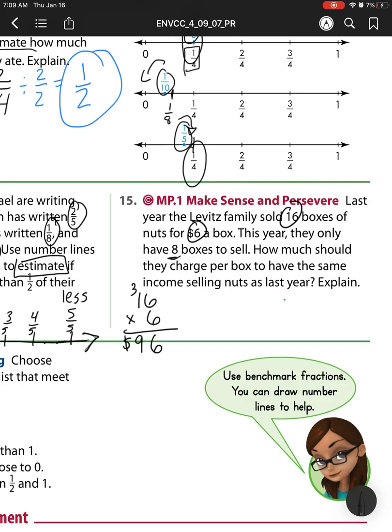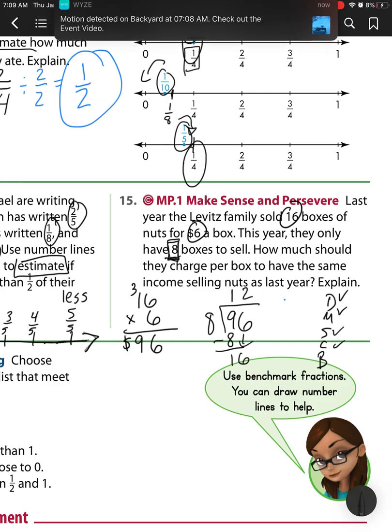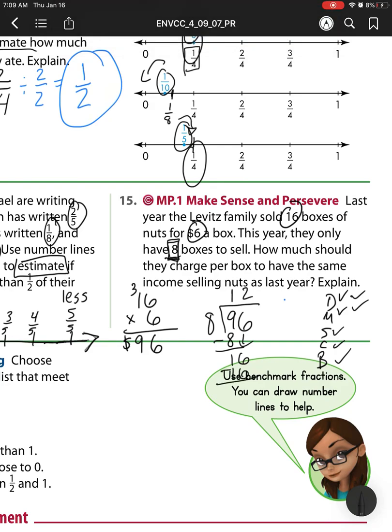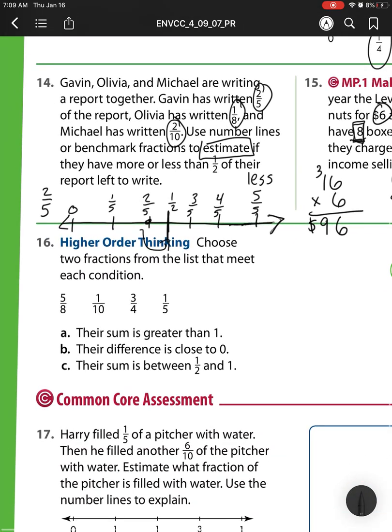Now what we're doing is we have to take that 96 and we have to break it up into 8, because they only have 8 boxes this time. So I'm taking 8 equal groups. And then remember on my side I write, does McDonald's sell cheeseburgers? 8 goes into 9 one time—that's my division. Multiply 1 times 8 is 8. Subtract, and I get 1. Check, 1 is less than 8. So I can bring down. 8 goes into 16, 2 times—that's my division. Multiply 2 times 8 is 16. Subtract, 16 minus 16 is 0. Check, 0 is less than 8. There's nothing to bring down, so my answer is 12. They would need to sell 8 boxes for $12 each.